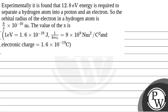Let's read the question. The question says that experimentally it is found that 12.8 electron volt energy is required to separate a hydrogen atom into a proton and an electron. The orbital radius of the electron in a hydrogen atom is 9 by x into 10 to the power minus 10 meter. The value of x is — given: 1 electron volt equals 1.6 into 10 to the power minus 19 joules, 1 by 4 pi epsilon 0 equals 9 into 10 to the power 9 newton meter square per coulomb square, and electronic charge equals 1.6 into 10 to the power minus 19 coulomb.